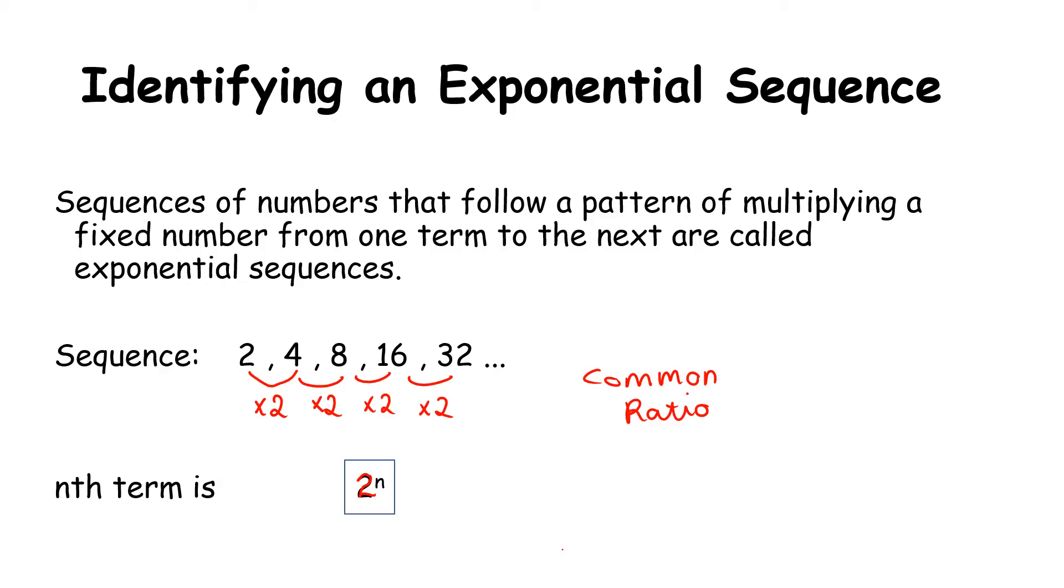So 2 to the power of 1 gives me 2. 2 to the power of 2 gives me 4. 2 to the power of 3 gives me 8. 2 to the power of 4 gives me 16. 2 to the power of 5 gives me 32. And so on.